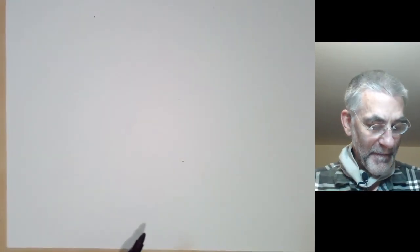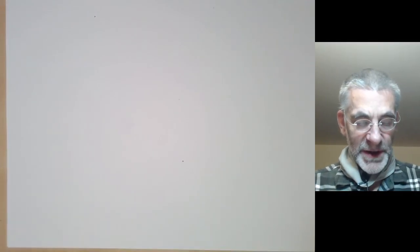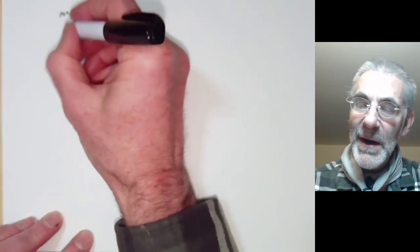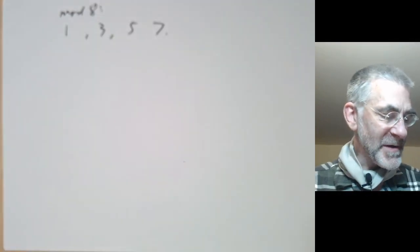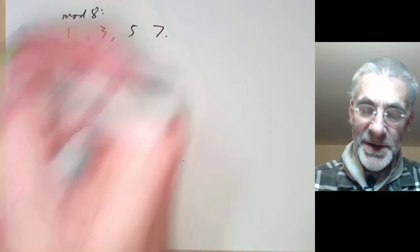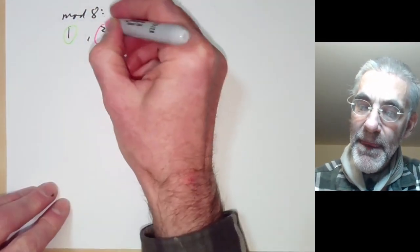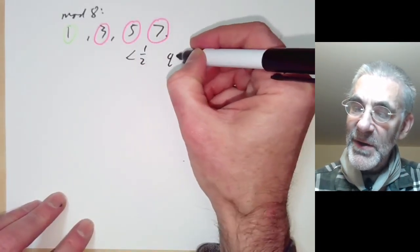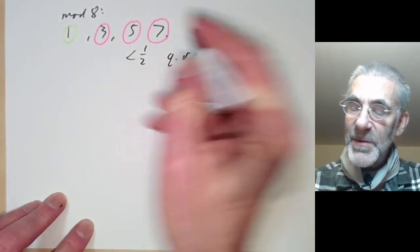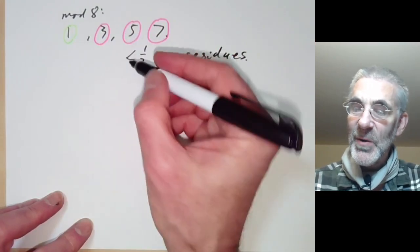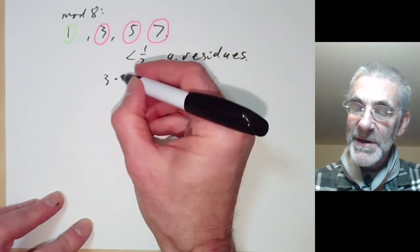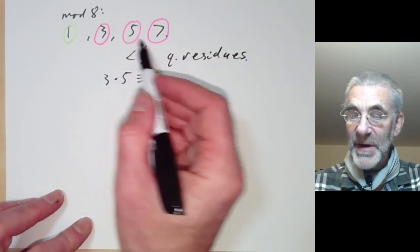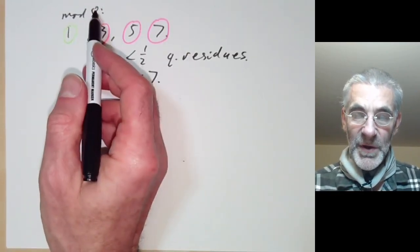This only works for primes. For example, if we work modulo 8 and take numbers co-prime to 8, we get 1, 3, 5, and 7. Of these, 1 is a quadratic residue, but 3, 5, and 7 are non-residues — so less than half of things are quadratic residues. We also notice the product of two quadratic non-residues can itself be a quadratic non-residue, because 3 times 5 is congruent to 7 mod 8. So the property that the product of two non-residues is a residue fails modulo 8.